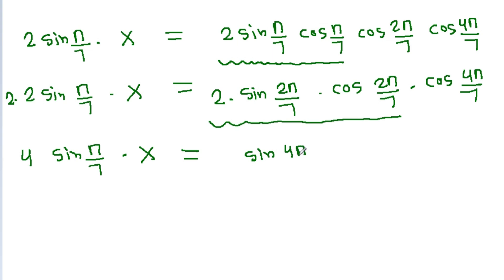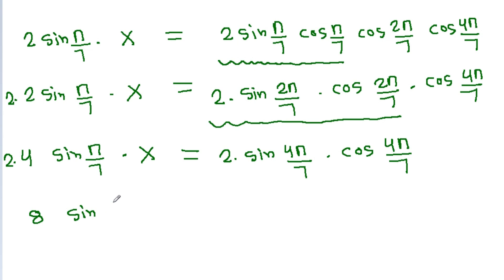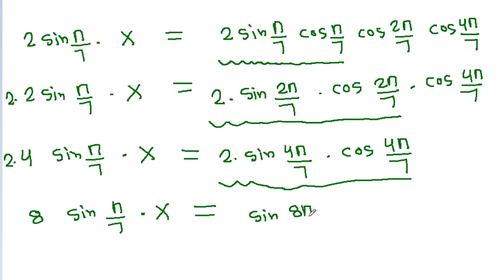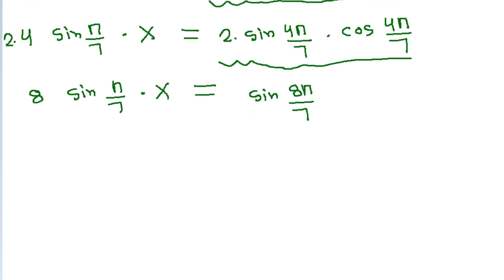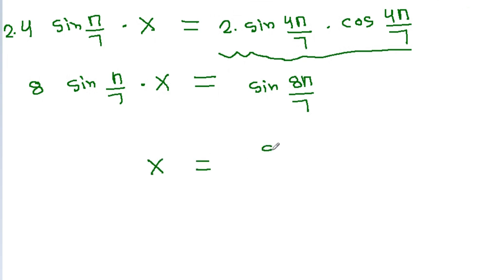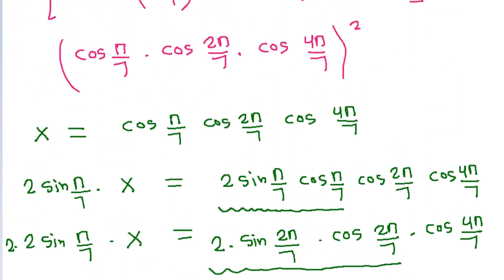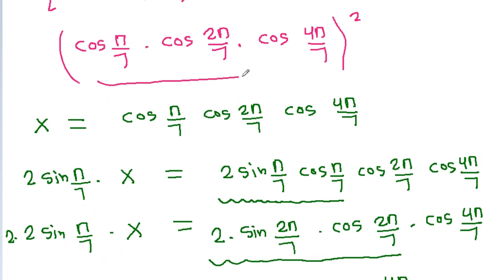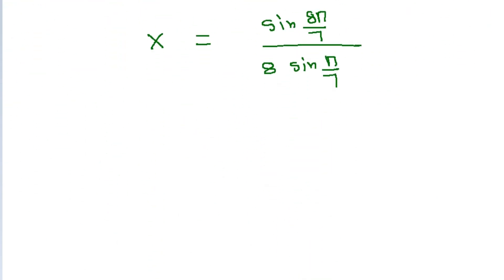Multiplying through, we get sin(4π/7) times cos(4π/7). Multiplying both sides by 2 again gives 8·sin(π/7)·x equals sin(8π/7), using the identity 2·sin(a)·cos(a) = sin(2a). So x equals sin(8π/7) divided by 8·sin(π/7).